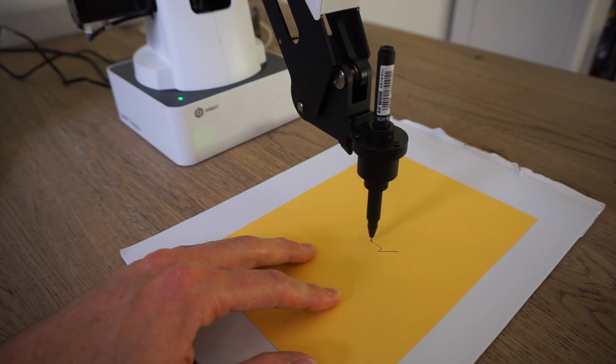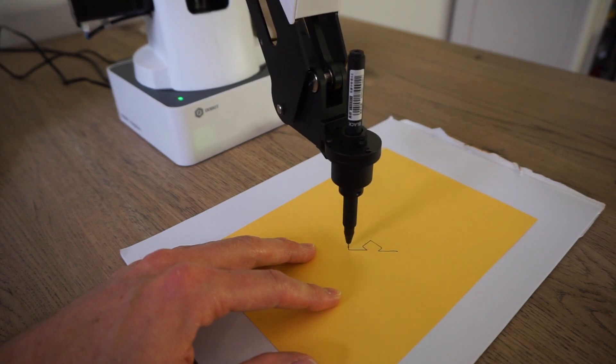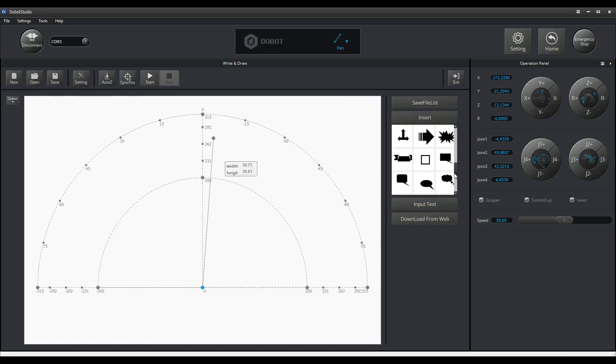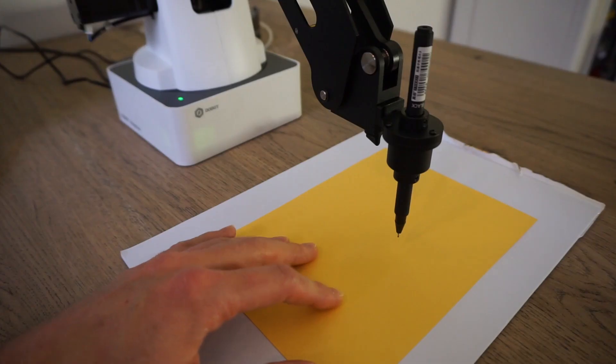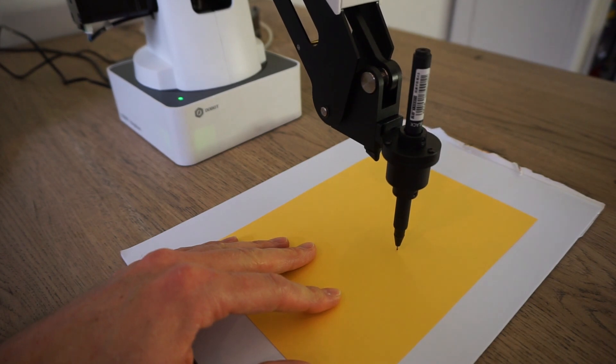Also, I tried to make a couple of drawings using the write and draw menu. Using the insert button, I selected a couple of basic figures. When the figures are in the correct place, you can press the sync post button. This will move the pen to the start position of the figure. This will also allow you to align the paper and set the pen down position. You can do this by moving the pen down until it just touches the paper.